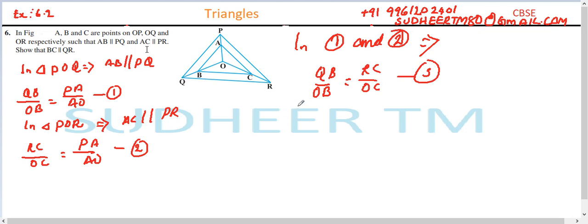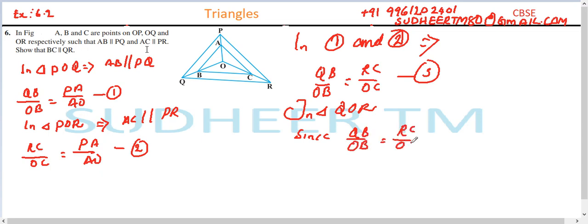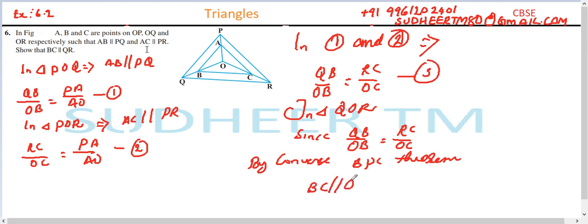Now in triangle QOR, we have the condition that QB divided by OB is equal to RC divided by OC. Since the ratios are equal, by the converse of the Basic Proportionality Theorem, BC is parallel to QR — which is what we needed to prove. Thank you.